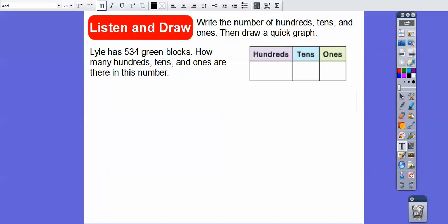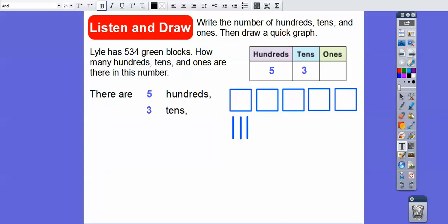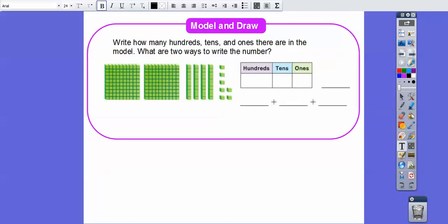So here we go. So Lyle has 534 green blocks. How many hundreds, tens, and ones are there in his number? So 500. Here's our 500. 3 tens and 4 units right there. So there's 534 right there.